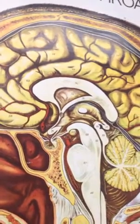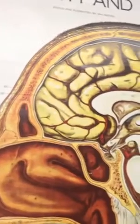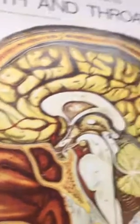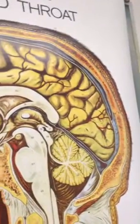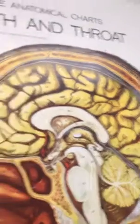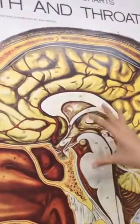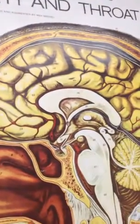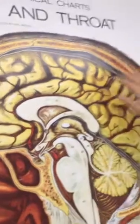The frontal lobe is the front. The occipital lobe is the back area. The temporal lobe is on the sides. The parietal lobe is on top.